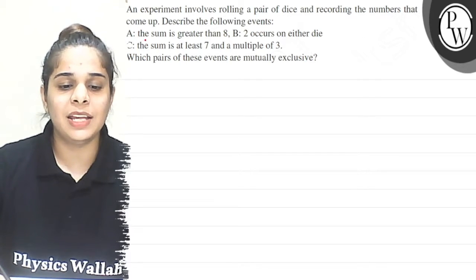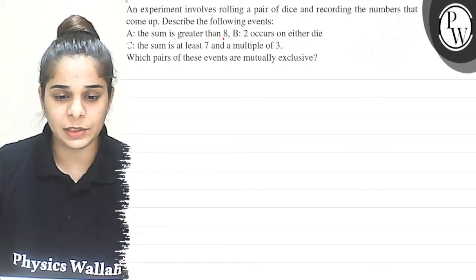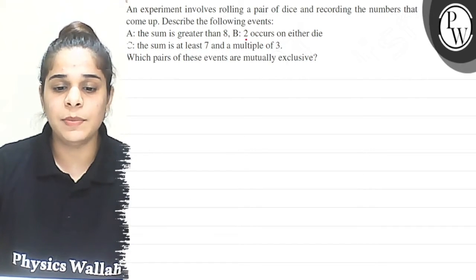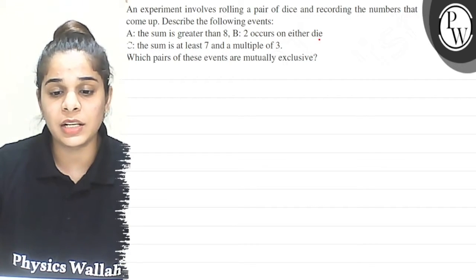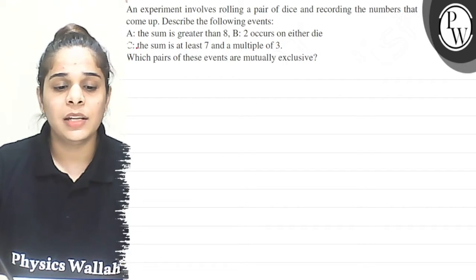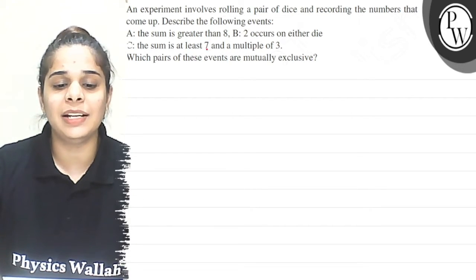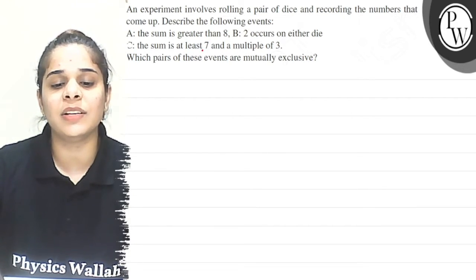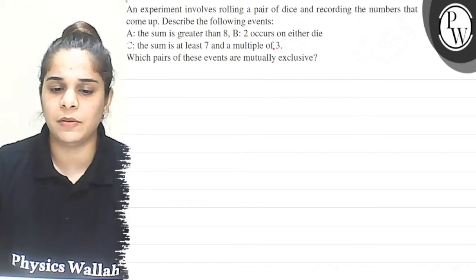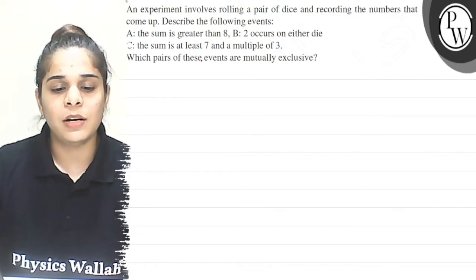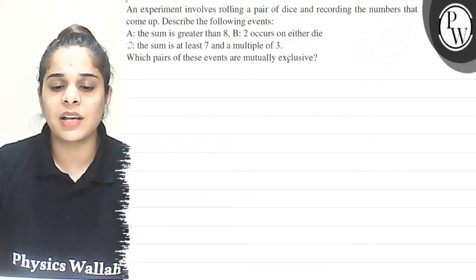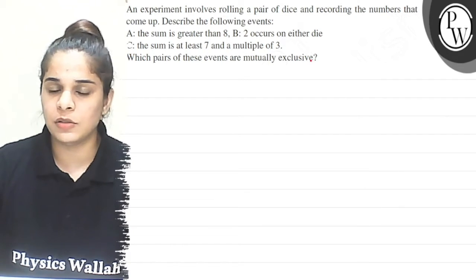Event A is the sum is greater than 8. Event B is 2 occurs on either die. Event C is the sum is at least 7 and a multiple of 3. Which pair of these events are mutually exclusive?